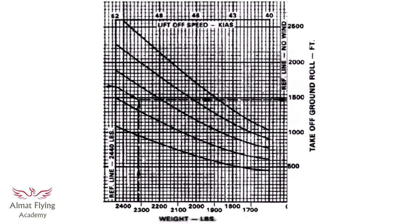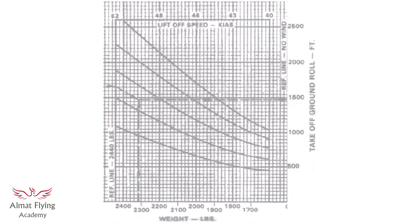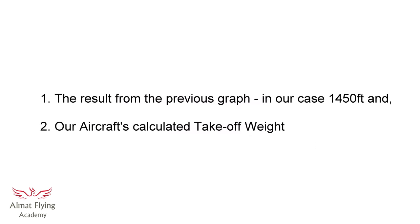So here is the second graph. Again, it looks a little daunting at first, but again, it isn't a complicated procedure to get your head around. For this graph, the input data we need to start is the result from our previous graph, in our case the 1450 feet, and our aircraft's calculated take-off weight.